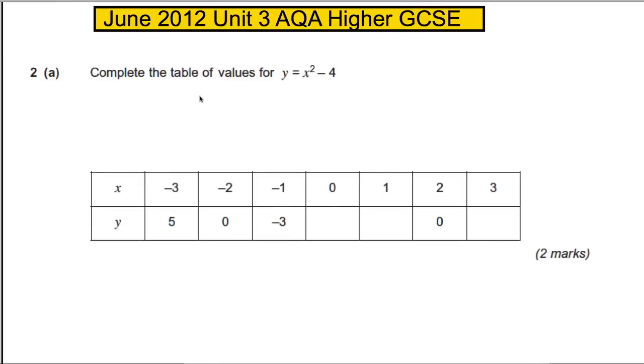Here we're asked to complete a table of values for the following function: y equals x squared subtract 4. That means you put an x in, you square it, and then you take away 4 from the answer. That's your y.